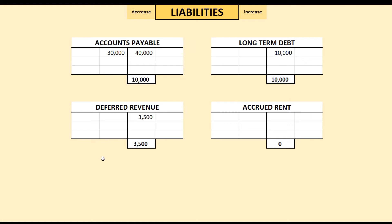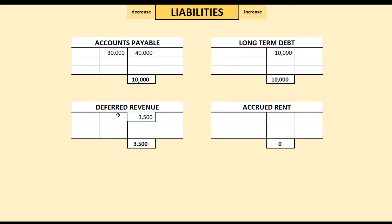Let's look at our deferred revenue T-account. When we originally accepted the deposit, we increased our cash T-account and also increased our deferred revenue account. Why? Because we received what we are due under our contract and therefore we have an accounting liability — we booked it as a liability. At that time it was not revenue yet, but in the future it will become revenue. And it just became revenue. We are actually reducing our obligation. We have delivered six of the 10 widgets, reducing our obligation by $2,100.